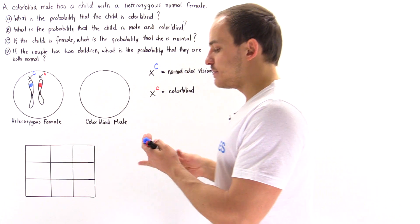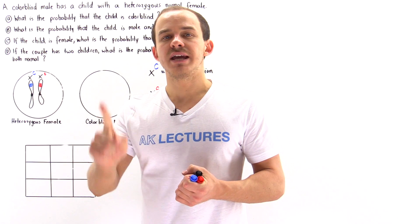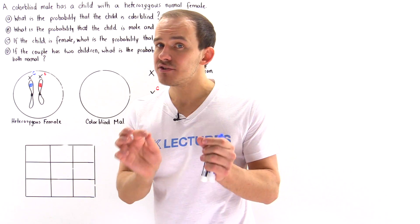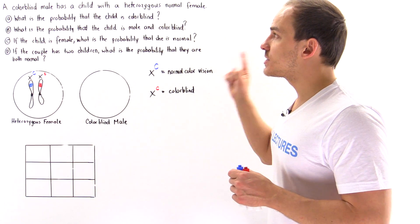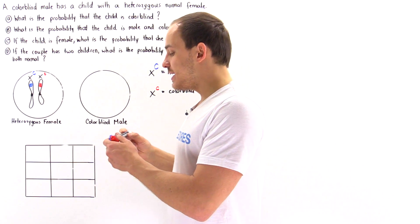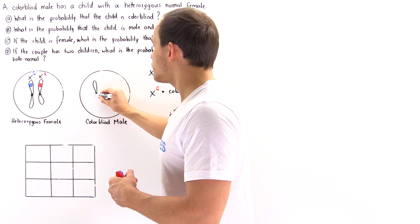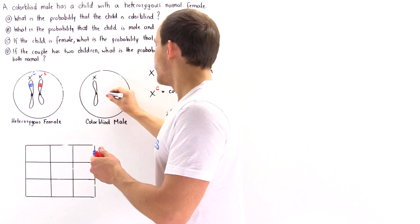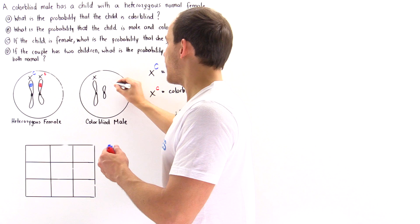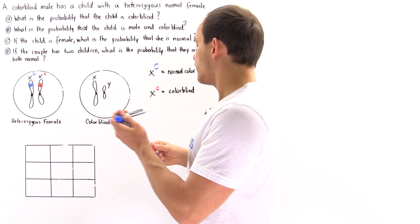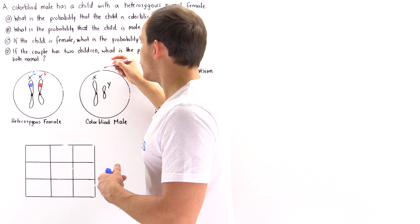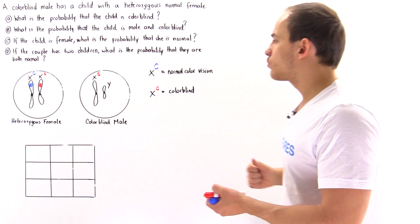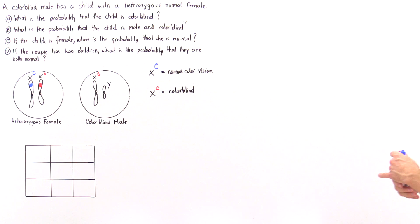What about the colorblind male? Unlike the female, the male has only one X chromosome; the other is the Y chromosome. Only the X chromosome carries the colorblind gene. The Y chromosome doesn't carry anything. So the X gets the lowercase red c because the person is colorblind, and the Y doesn't get anything because it doesn't contain that particular gene.